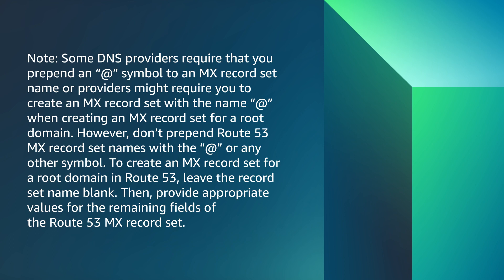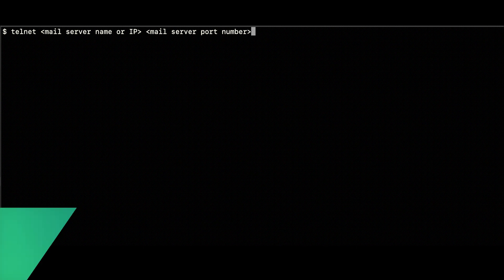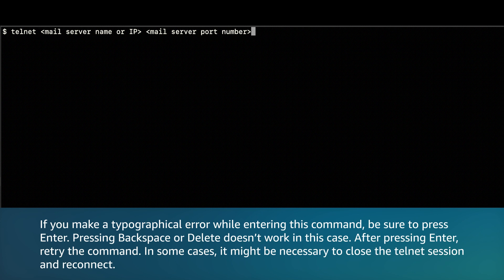Then, provide the appropriate values for the remaining fields of the Route 53 MX record set. Connect to the mail server and test your ability to send and receive email using SMTP commands. If you make a typographical error while entering a command, be sure to press Enter — pressing Backspace or Delete doesn't work in this case. After pressing Enter, retry the command.